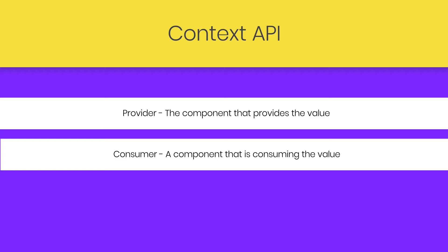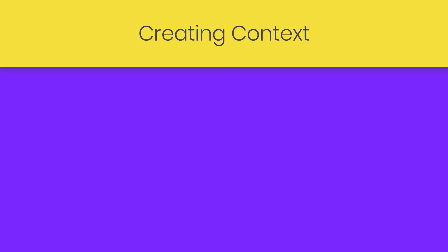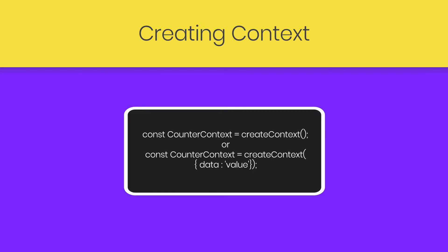A component that is consuming the value is known as the Consumer. createContext creates a global store in the React application and stores state and property values in it. When we want a value available to all components, we store it in the context store so we can access that value directly from the store without passing it from top to bottom through every layer of components.